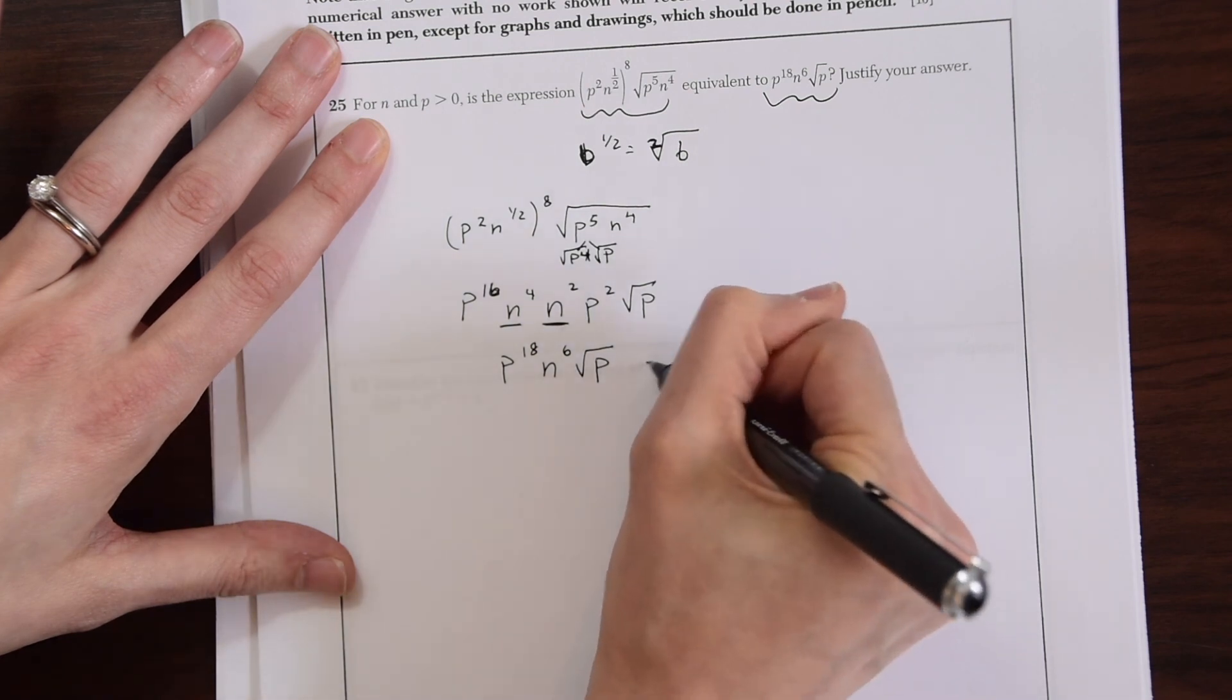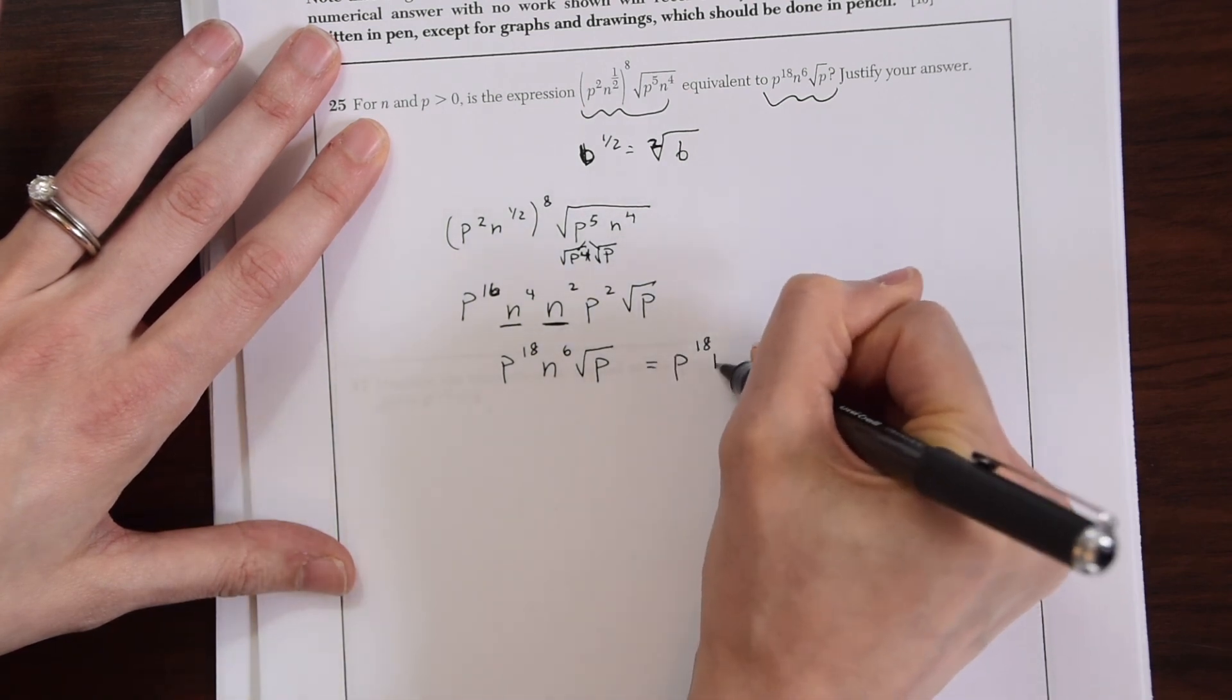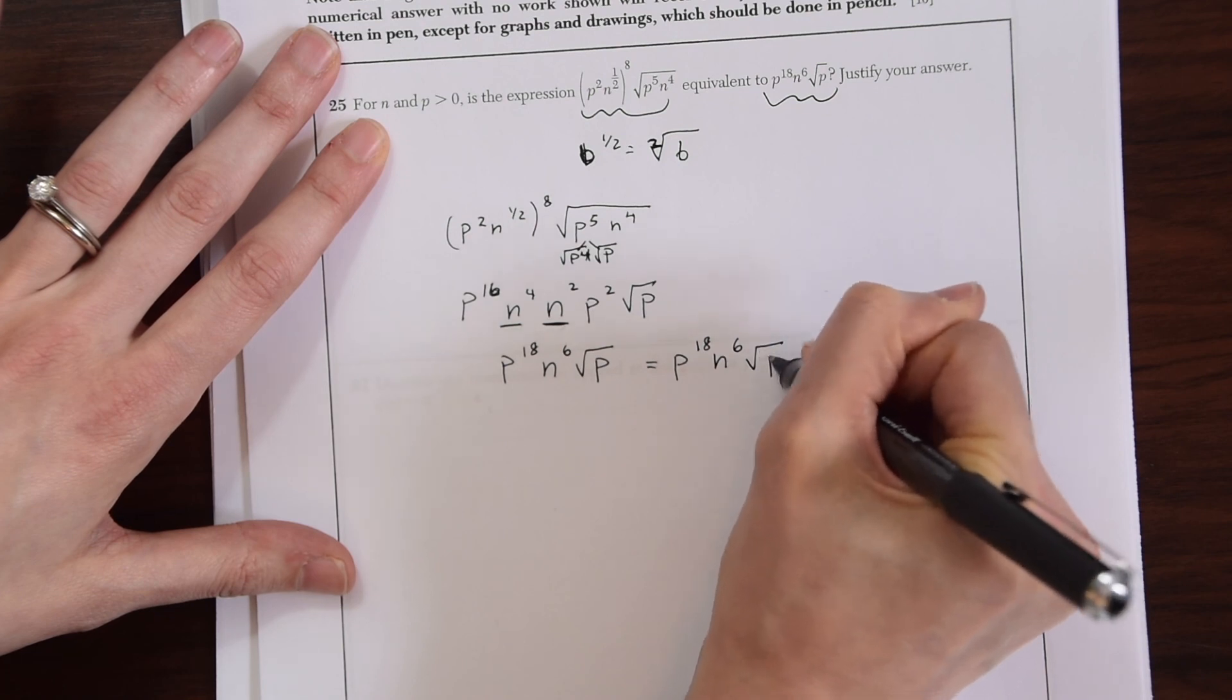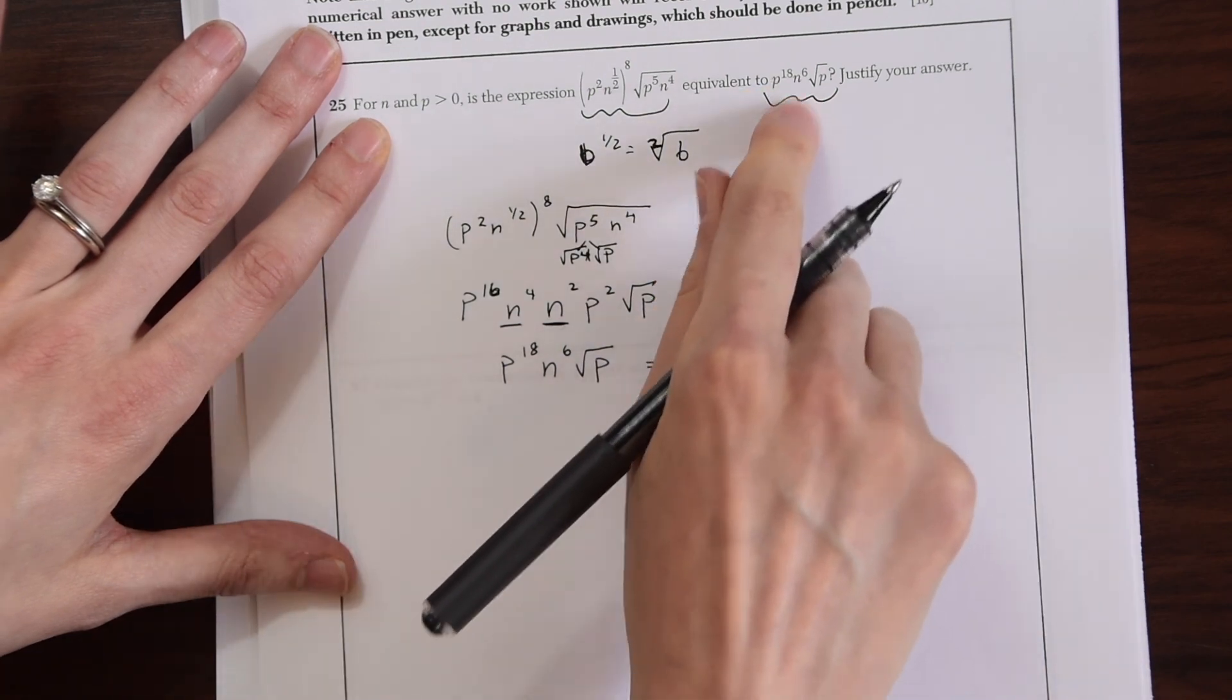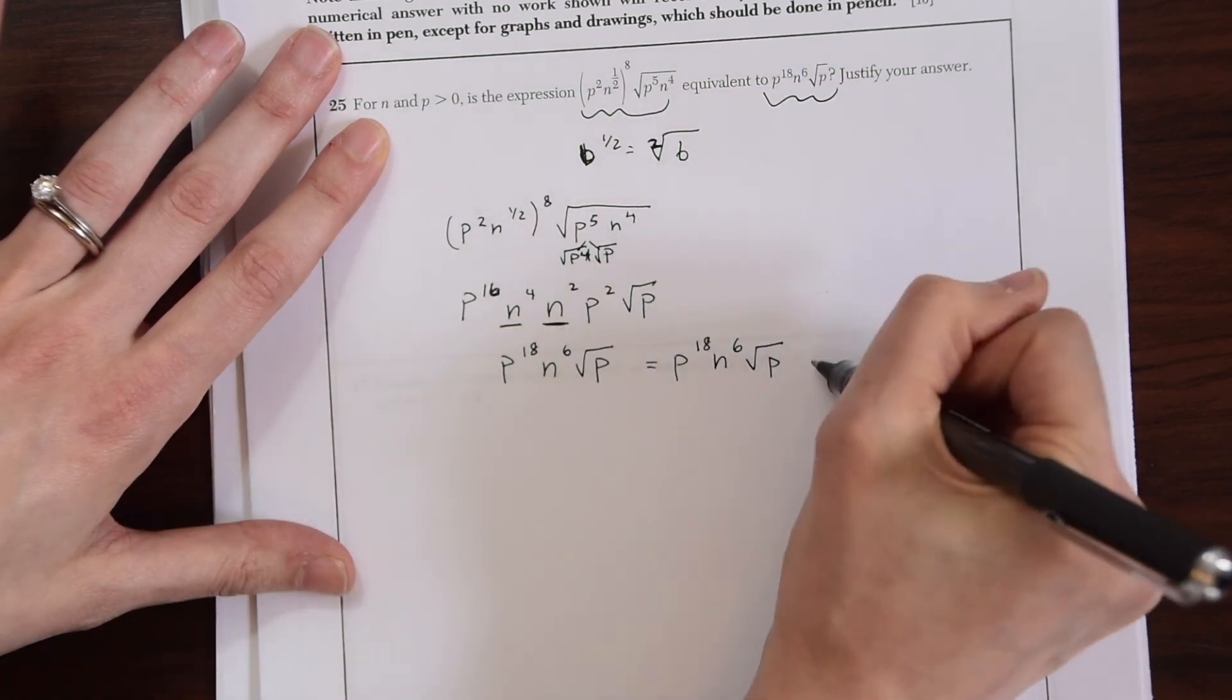And we see that that is equal to what they said originally, p to the 18th n to the sixth radical p. So we know that we are right.